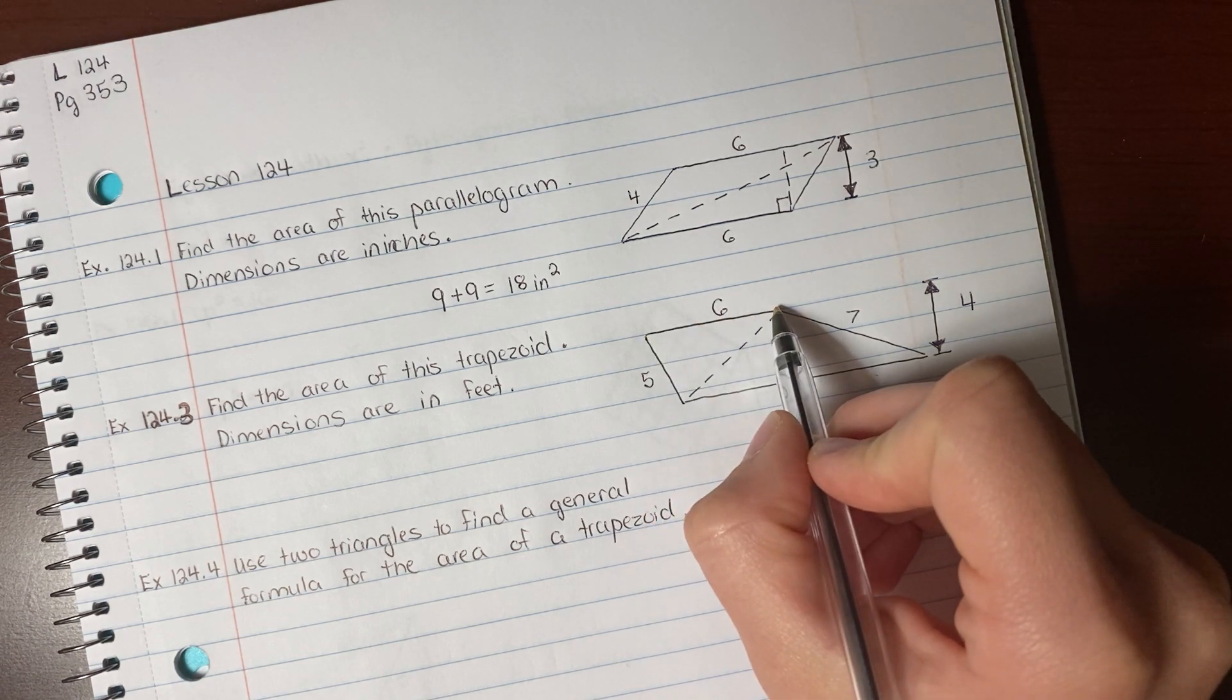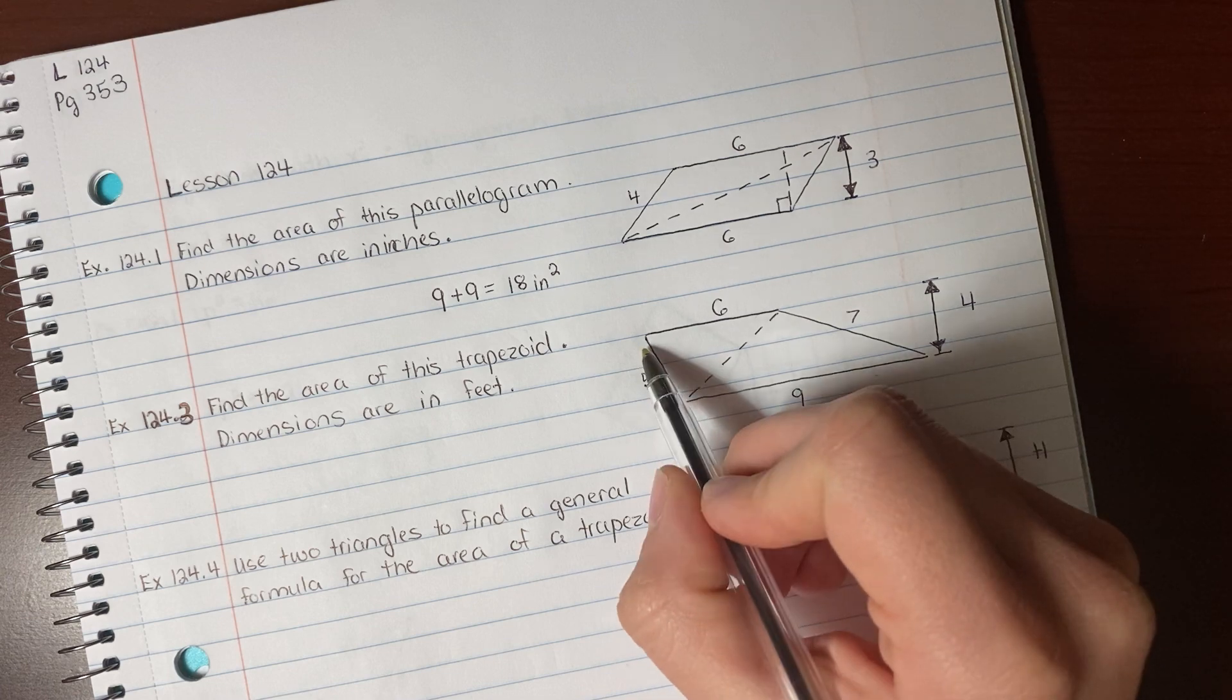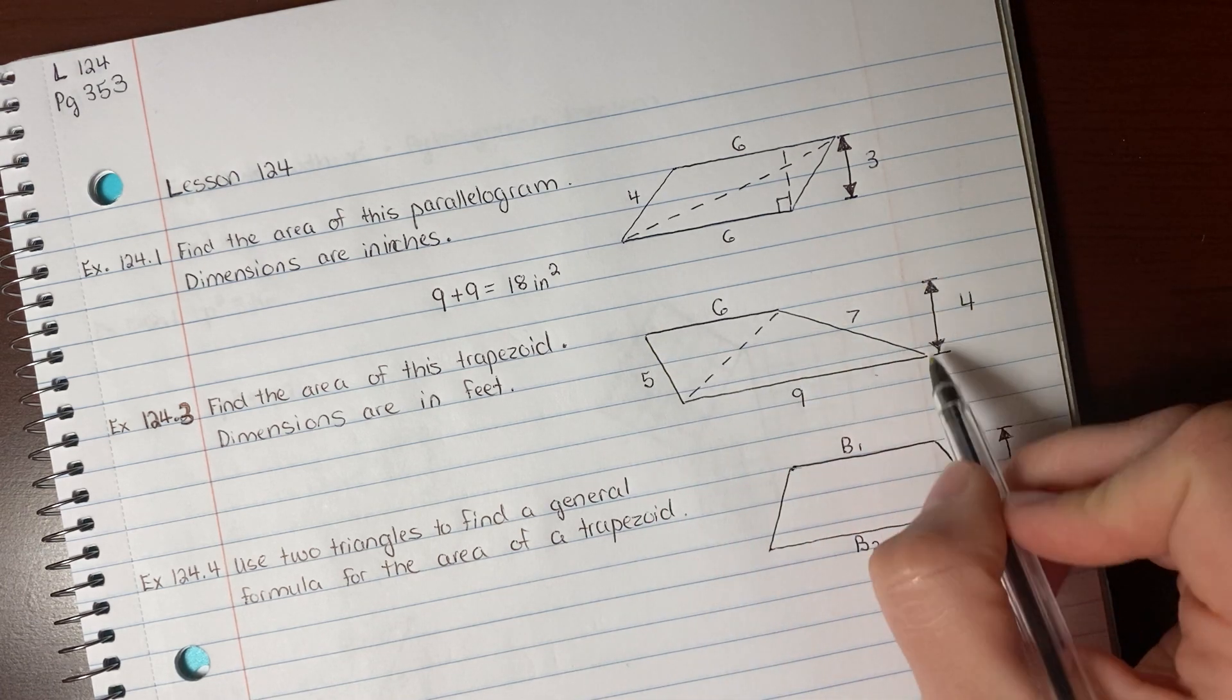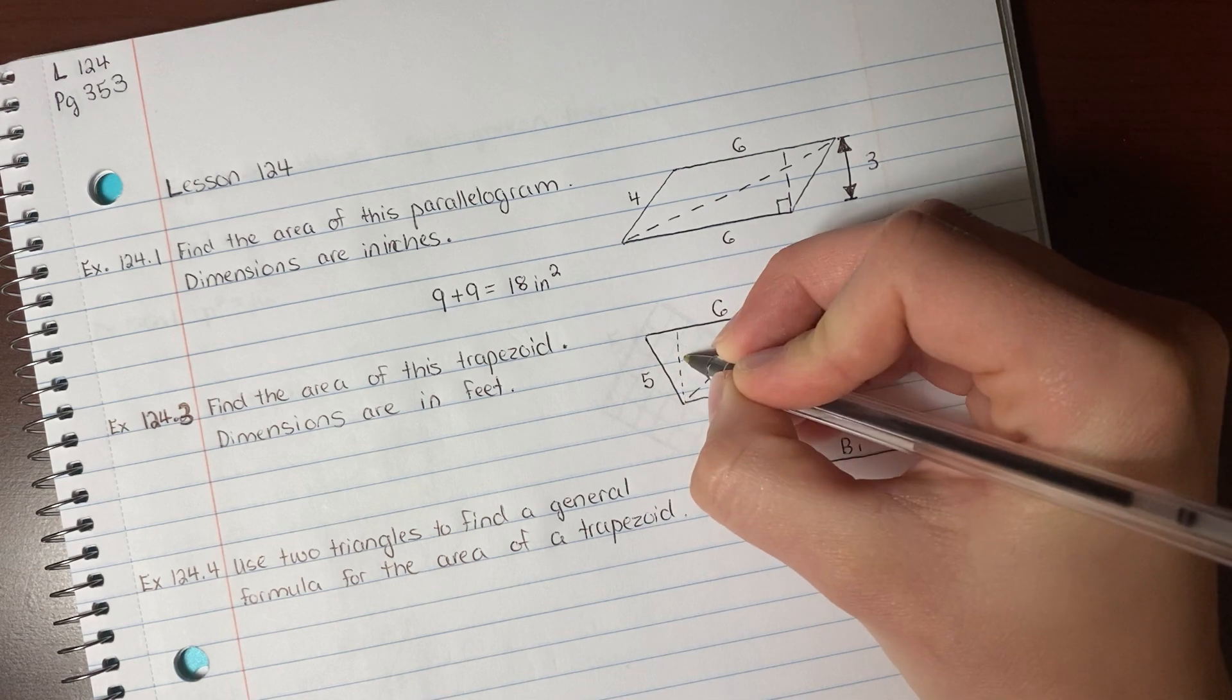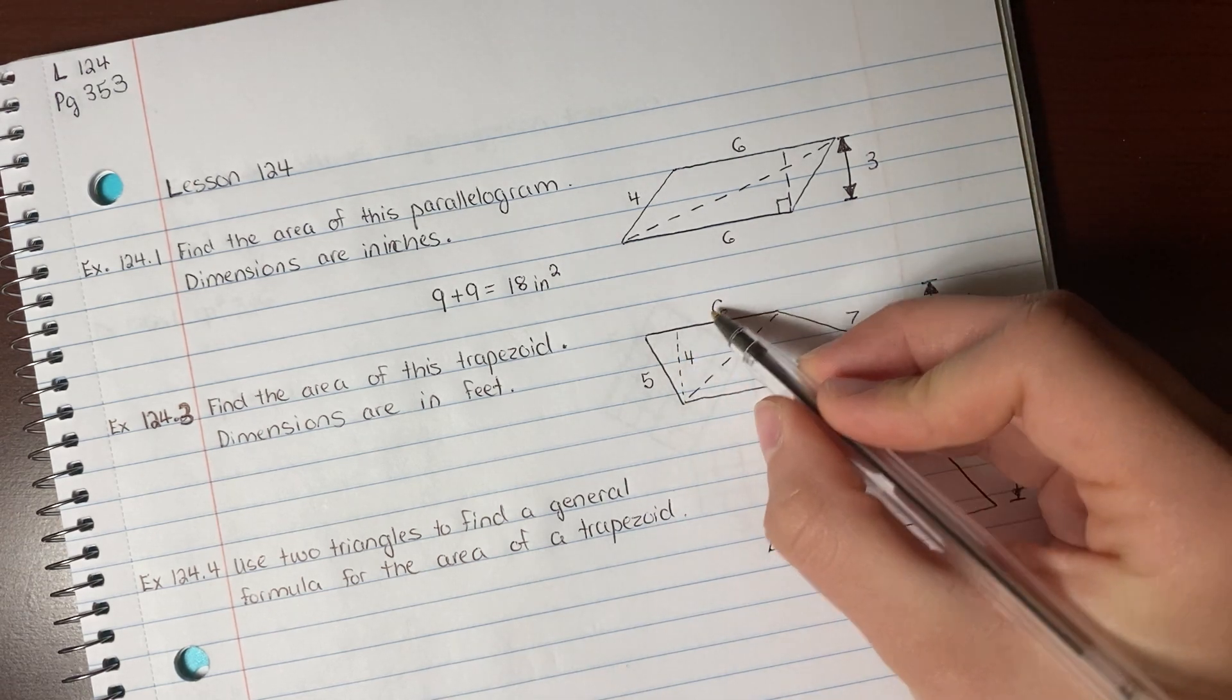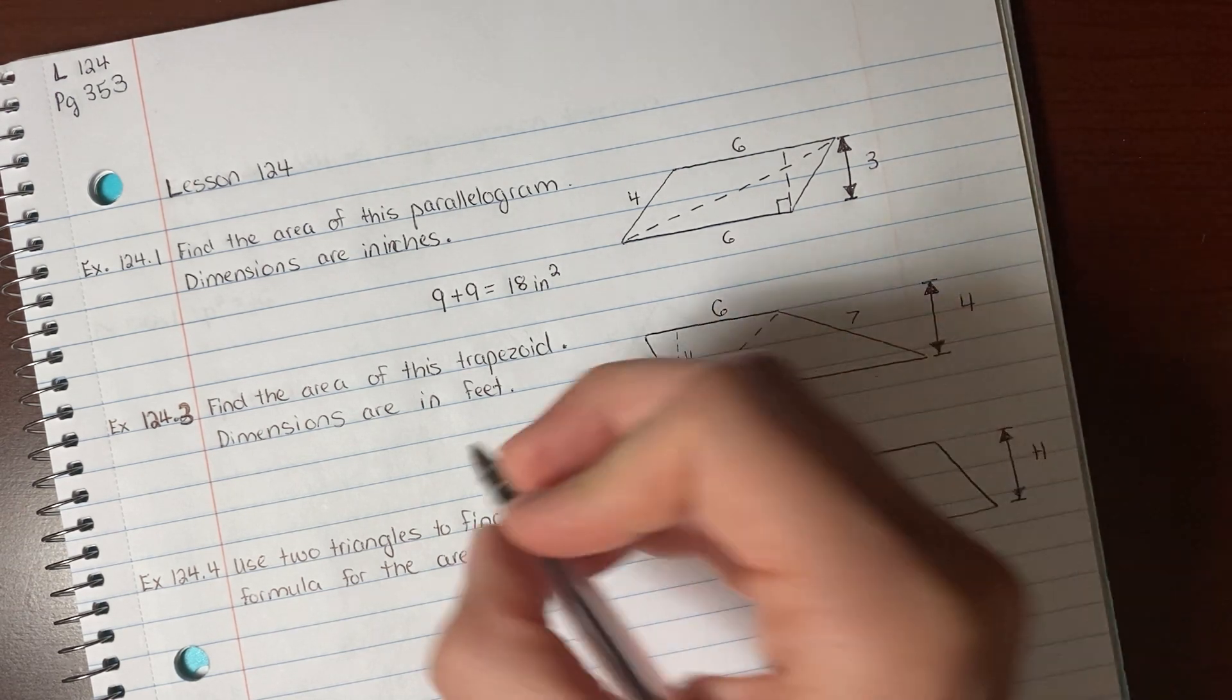Your base is 6. Your height is not 5. That's not a right angle. Your height is 4. And if you want to draw the height in there just to help you, you may. 6 times 4, 24, divided by 2 is 12.